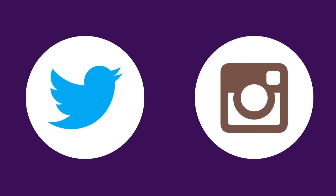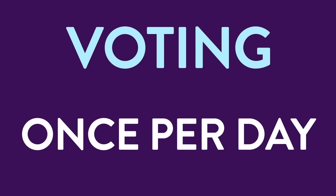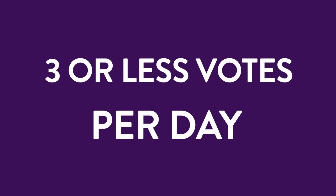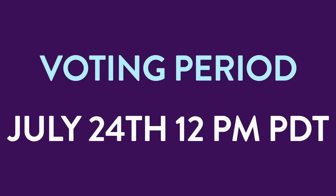Important things to also take note of: 1. voting using Facebook is limited to only US Sones, while Twitter and Instagram are open to all Sones. 2. Voting is only allowed once per day on each social media platform, making for a total of 3 or less votes per day, depending on how many social platforms out of the 3 you use. 3. The online voting period will last until 12pm PST on July 24th, so Sones don't forget to vote!